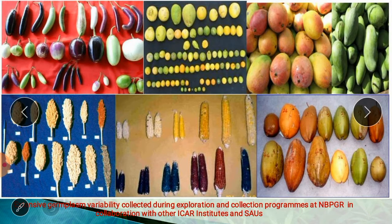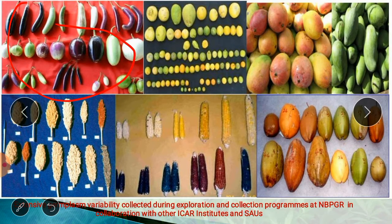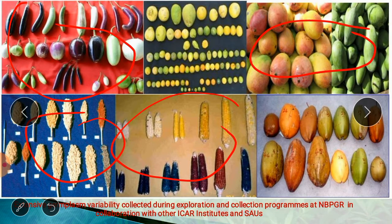In this picture you can see germplasm variability collected during exploration and collection programs at NBPGR in collaboration with other ICAR institutes and State Agriculture Universities. Here you can see brinjal or eggplant, mango, jowar, maize, coconut, and citrus.